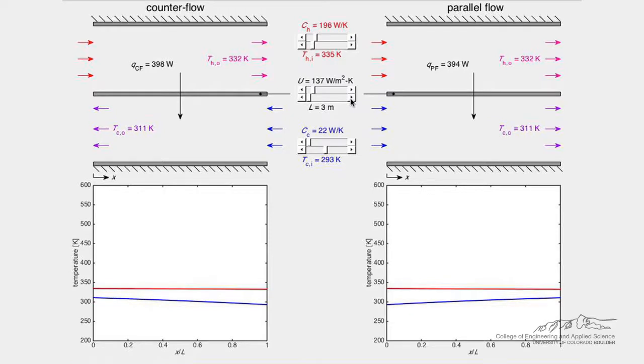The hot fluid heat capacity rate, capital C sub h, and the cold fluid heat capacity rate, C sub c, using the slider bars.